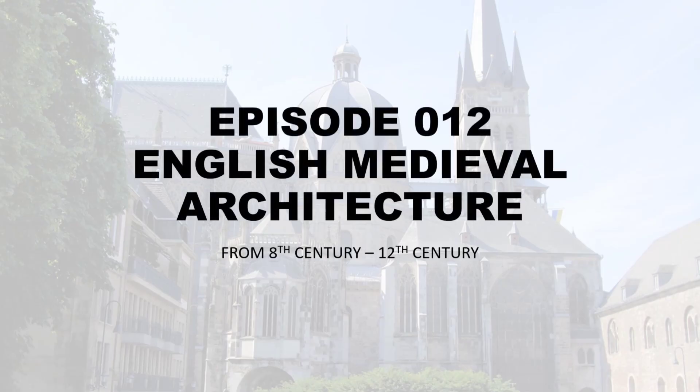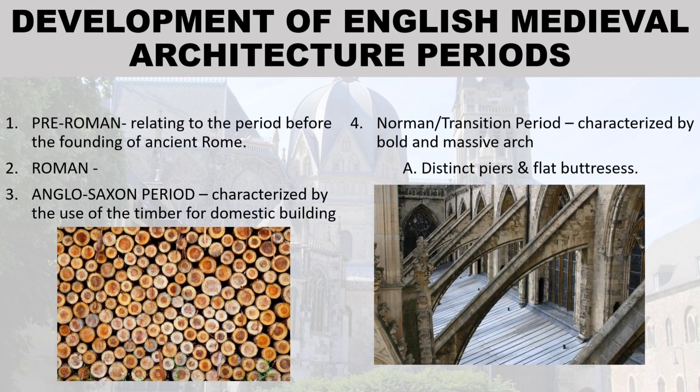Episode 12: English Medieval Architecture. Development of English Medieval Architecture — Periods. Number one: Pre-Roman, relating to the period before the founding of ancient Rome. Number two: Roman. Number three: Anglo-Saxon period, characterized by the use of timber for domestic building.